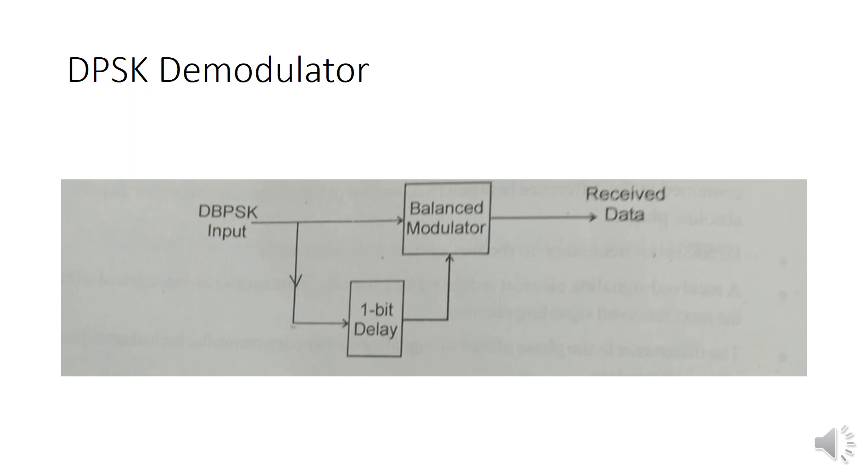The main disadvantage is the probability of error is high when compared to differential phase shift keying. It requires between 1 dB and 3 dB signal-to-noise ratio to achieve the same bit error rate as that of absolute binary phase shift keying.